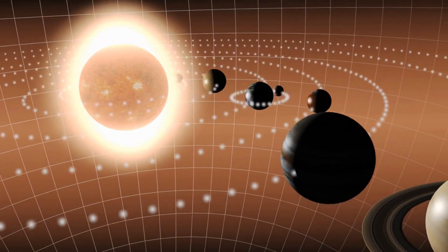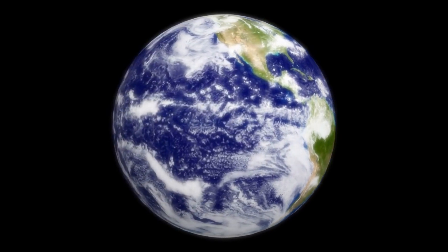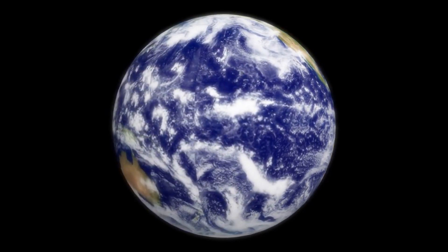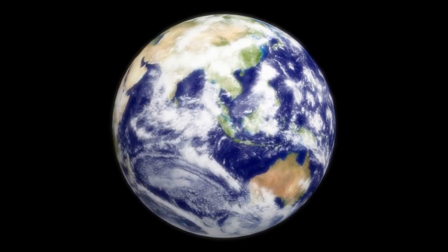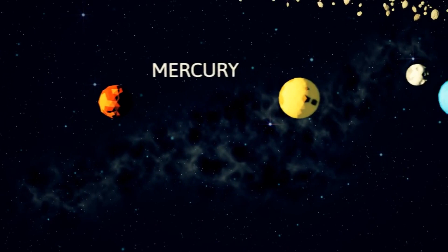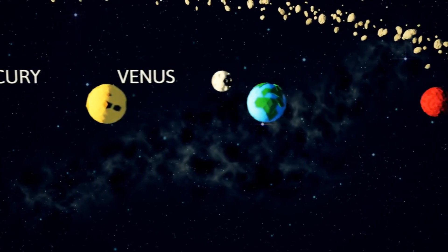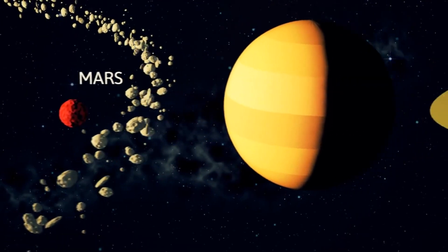All planets are named after Roman gods except Uranus and Earth. The name Earth is derived from the Old English-German word for ground or soil, with the term having been in use for at least 1,000 years. All of the other solar system planets are named after Roman gods except Uranus, which takes its name from the Greek god of the sky, Uranus.